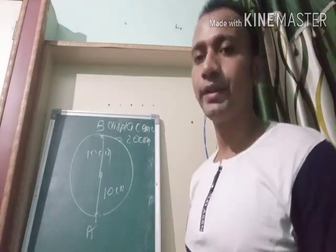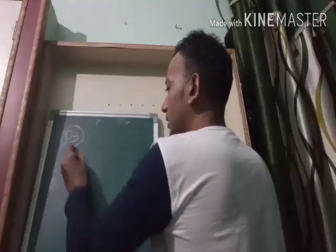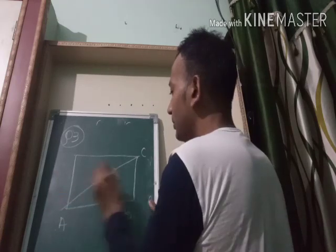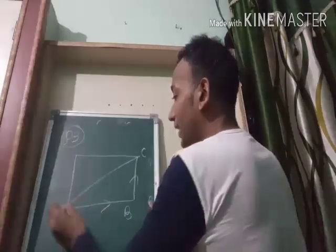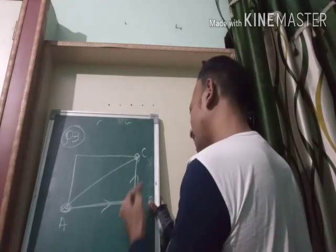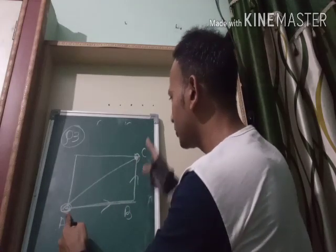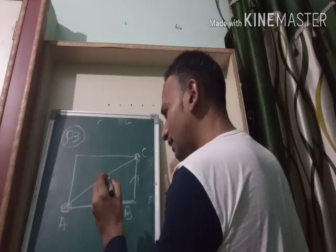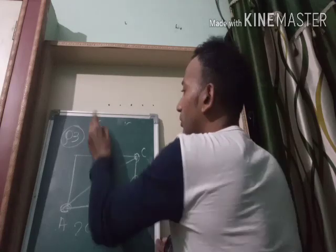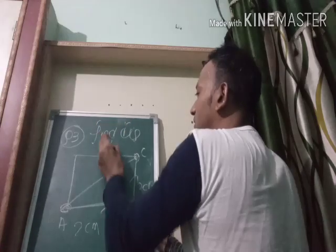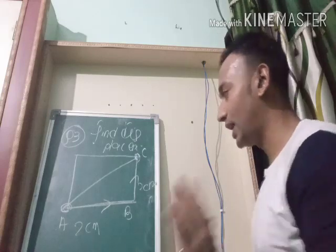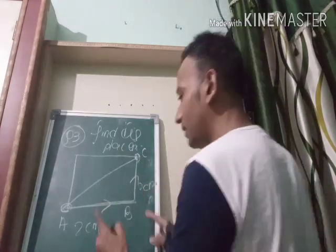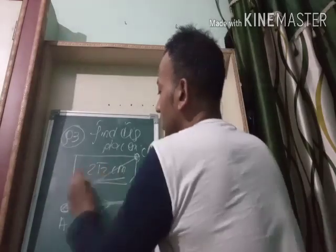Now I am giving you one question for homework. The third question: a body moved from A to C — first from A to B and then from B to C — along a square with side 2 cm. Find the displacement, which is the shortest distance between the initial position A and the final position C. This is the diagonal of the square. The answer is 2√2 cm.